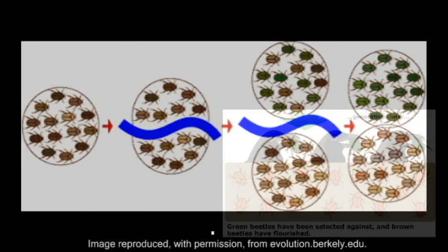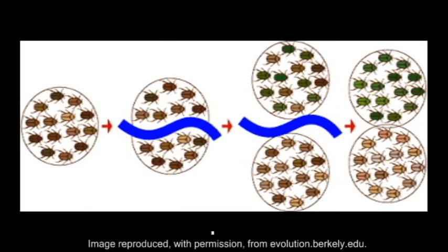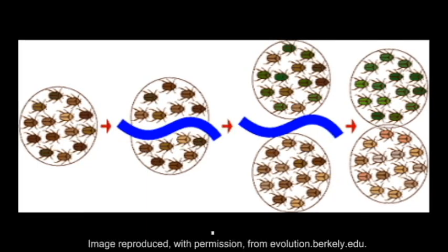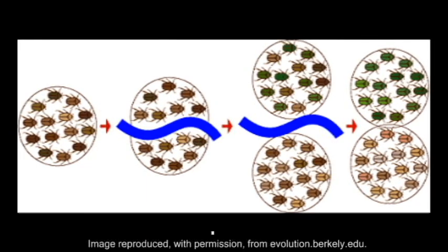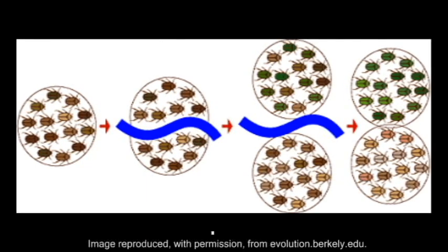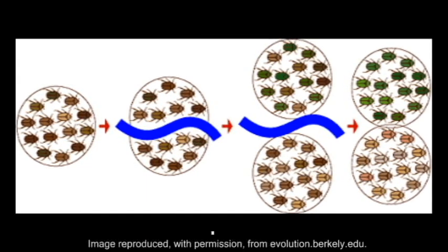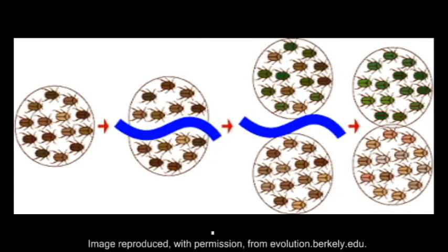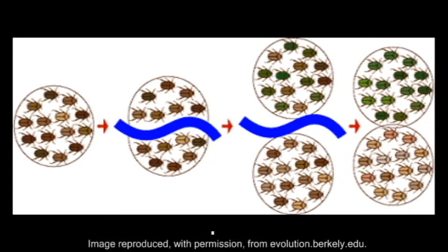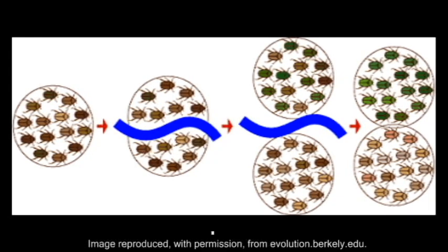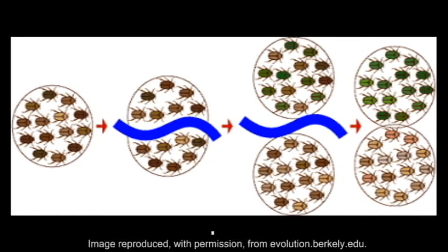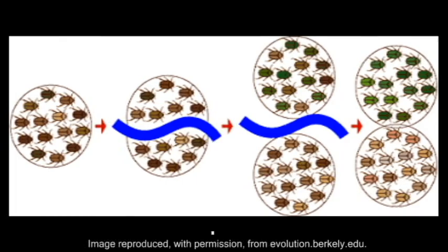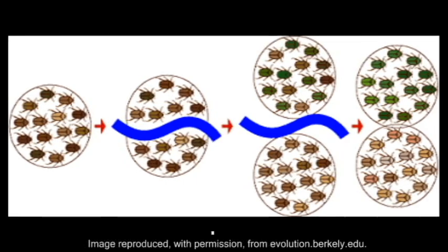If a large population becomes split into smaller ones, and those smaller populations aren't allowed to readily mate, genetic differences will accumulate between the populations based on their environment. After enough time passes, the populations will no longer be capable of mating at all, and a new species is said to have formed.